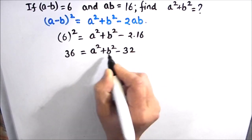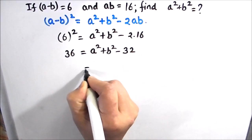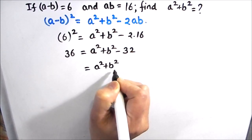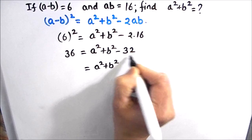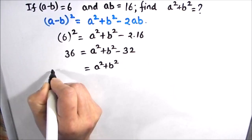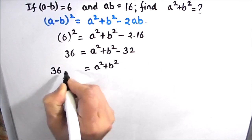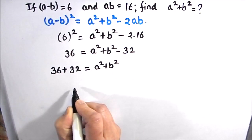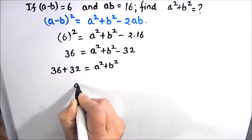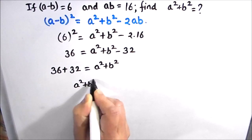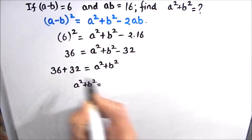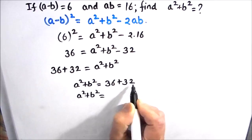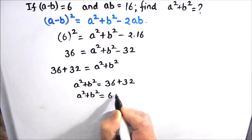Now as we need to find A² + B², we are going to leave A² + B² on the right hand side and we will move this 32 to the left hand side. So that is going to be 36 + 32. Now we can switch the sides. So A² + B² is equal to 32 + 36 which is equal to 68.